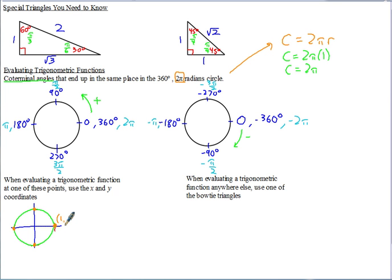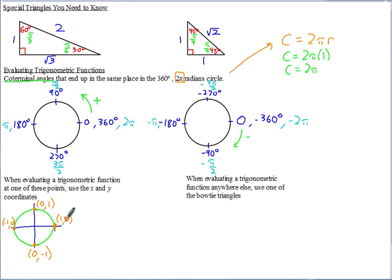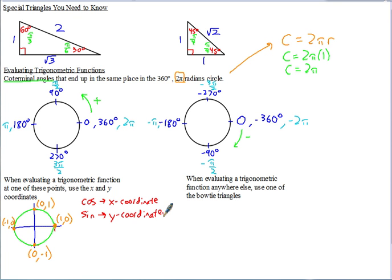The coordinates are: (1, 0) at 0, (0, 1) at pi over 2, (-1, 0) at pi, and (0, -1) at 3 pi over 2. Cosine corresponds to the x-coordinate: cosine equals 1, 0, -1, and 0 at those points. Sine corresponds to the y-coordinate: sine equals 0, 1, 0, and -1 at those points.